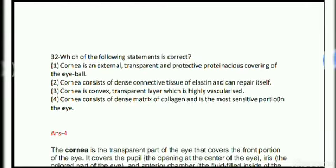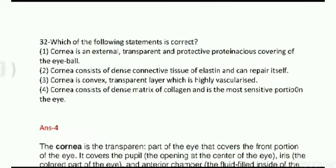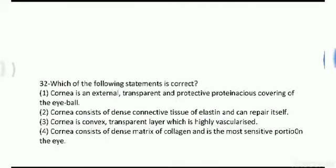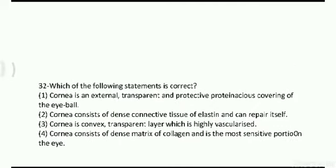Next, question number 32 is from the 11th NCERT chapter on neural coordination, directly asking about sense organs. The question is: which of the following statements is correct? Options: cornea is an external transparent and protective proteinaceous covering of the eyeball; cornea consists of dense connective tissue of elastin and can repair itself; cornea is a convex transparent layer which is highly vascularized; cornea consists of dense matrix of collagen and is the most sensitive portion of the eye.